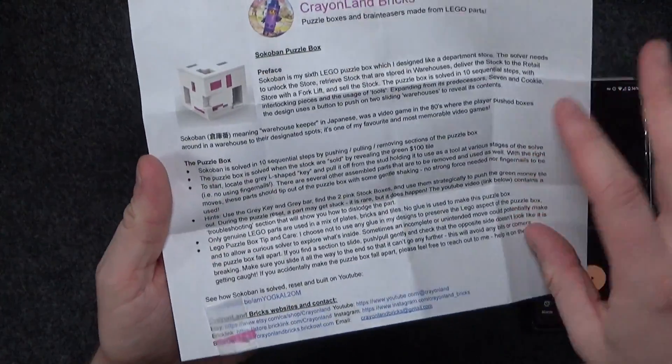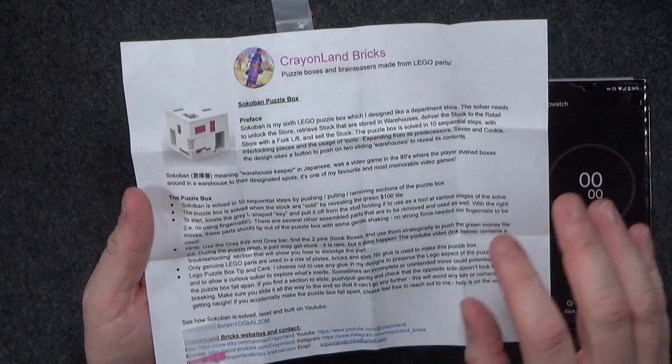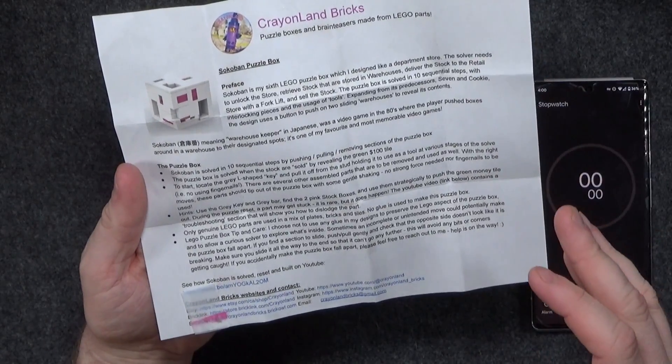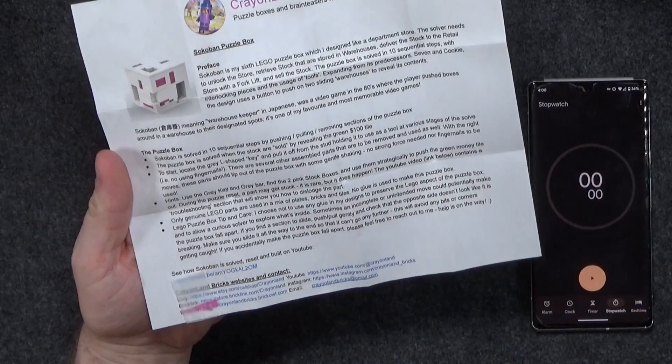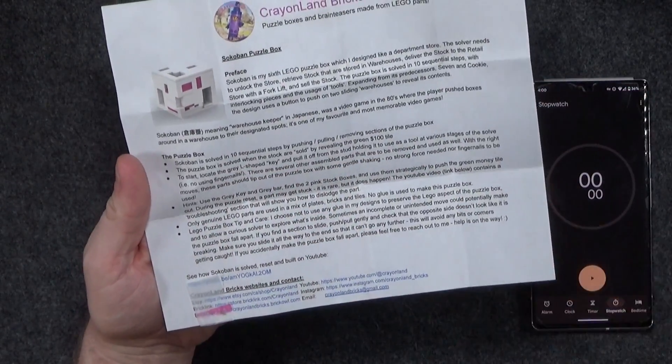Here's the description for it. It's solved in 10 sequential steps by pushing, pulling and removing sections of the box. There's a tool which is a gray shaped key and that's our first move, pull it off the stud and use it as a tool.